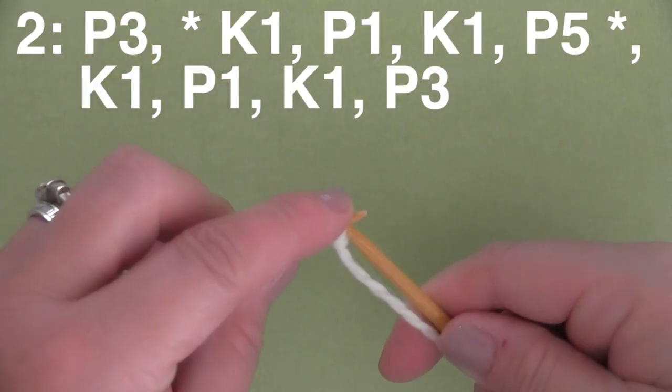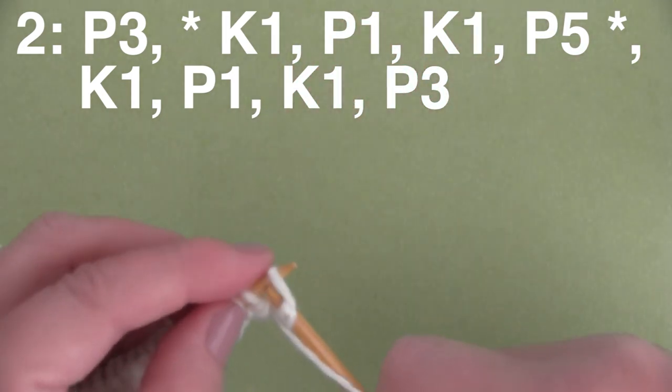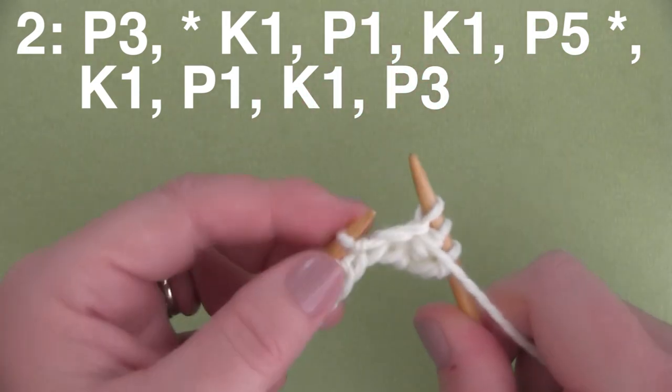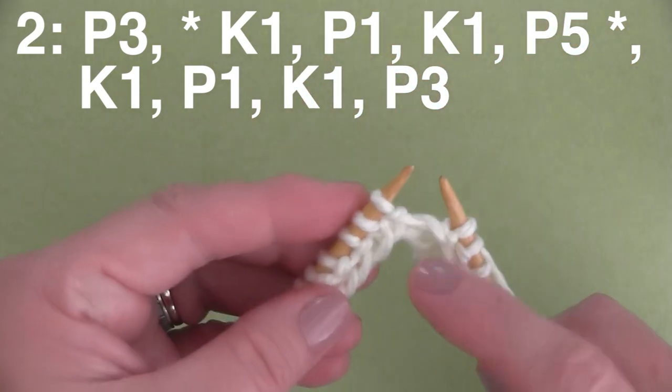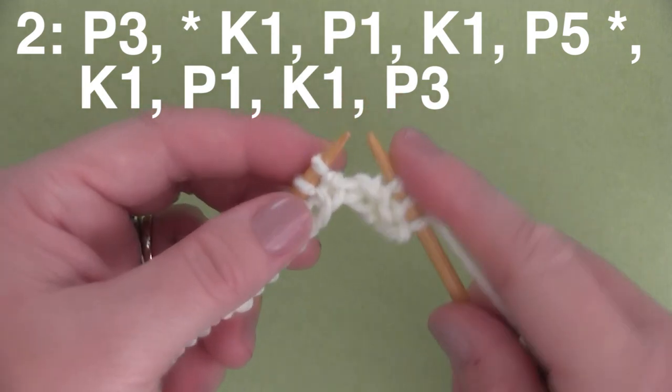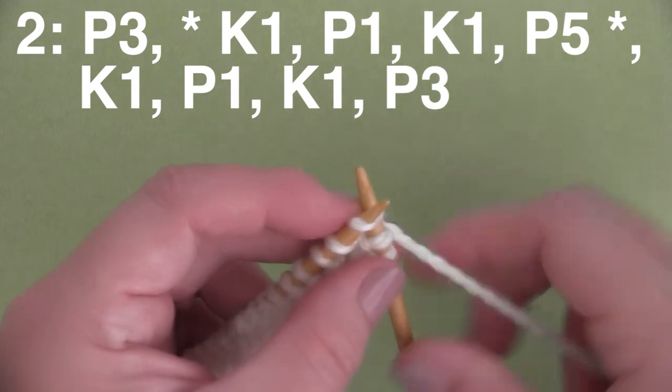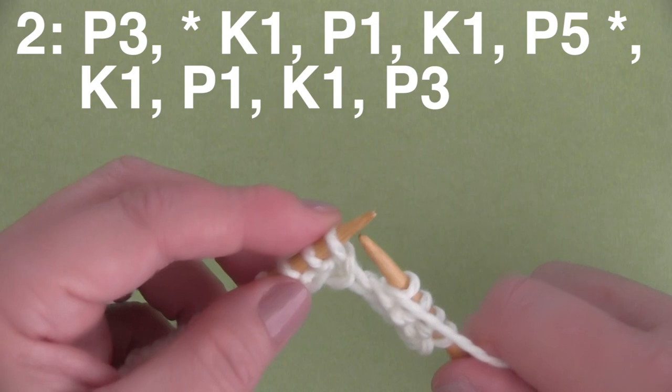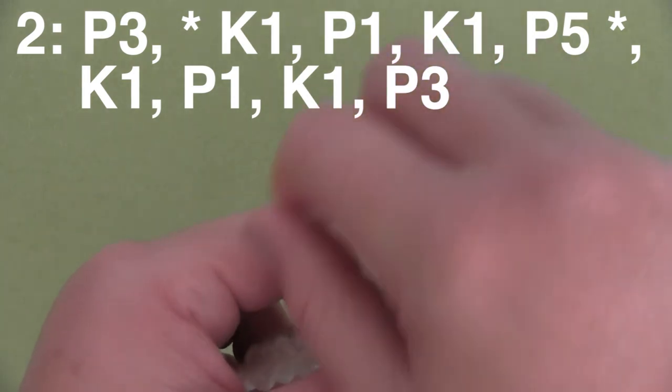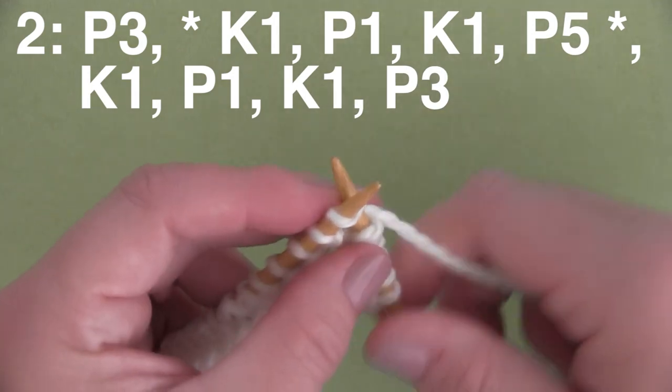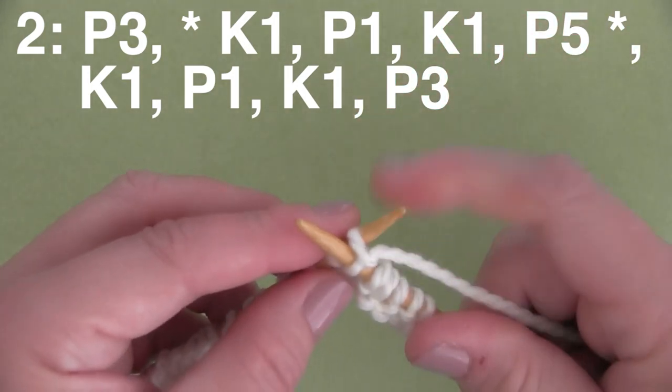P3 is how we start out Row 2 here. So there's 3 purl stitches, 1, 2 and 3. And then we're going to take our yarn to the back to knit, and you'll see the asterisks. It's K1, P1, K1, P5. So we're knitting 1 stitch. And then we're bringing our yarn to the front, and it is P1, purling 1 stitch. Then we are knitting 1 stitch.